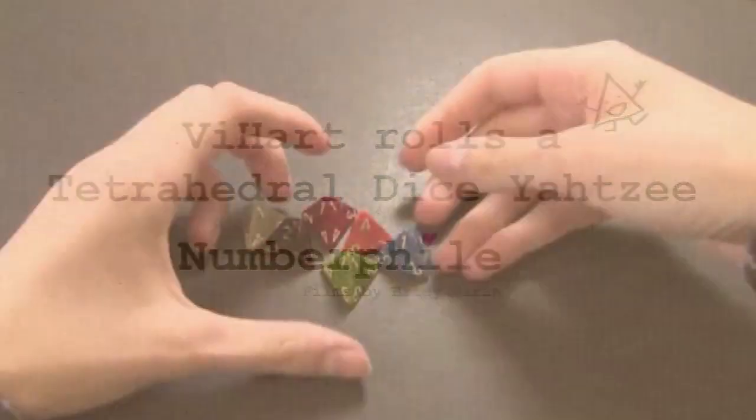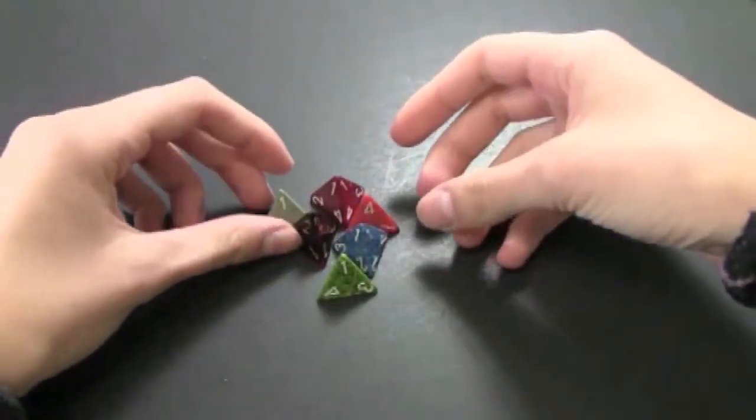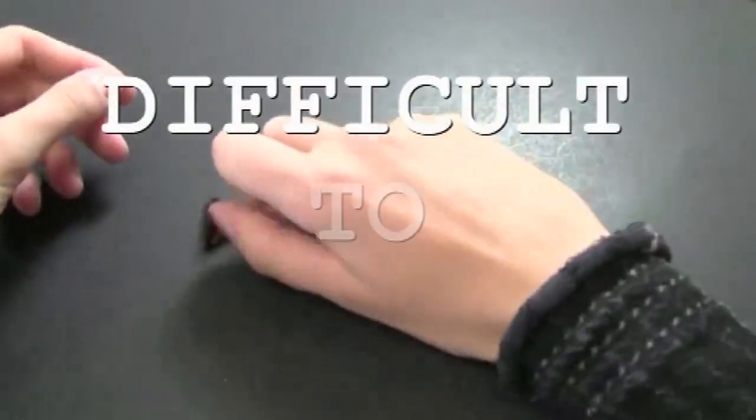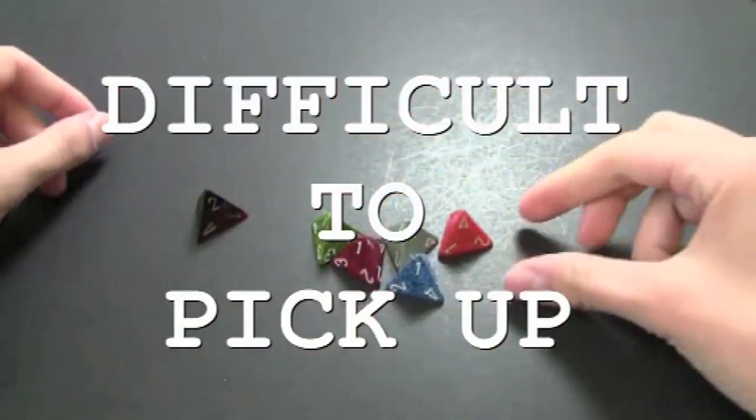Tetrahedral dice have many survival advantages over the cubular dice. Among which is that they are very difficult to pick up because they're pointy. So I'm going to have to sweep them off the table.